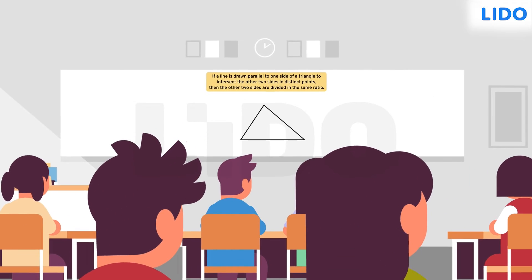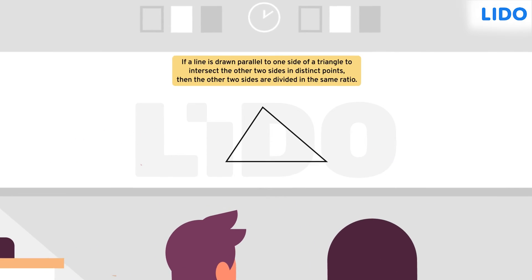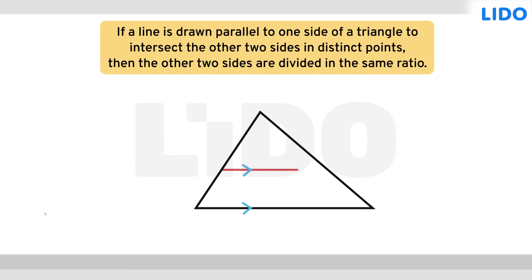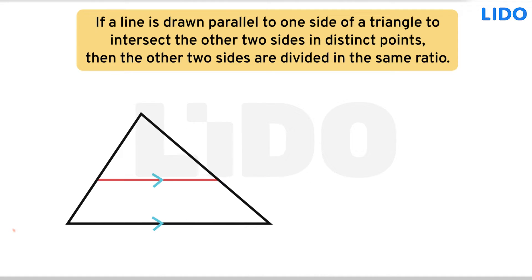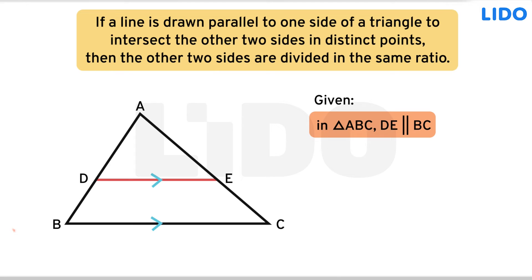Let's look at the proof of the Basic Proportionality Theorem. As per the statement of the theorem, if a line is drawn parallel to one side of a triangle to intersect the other two sides in distinct points, then the other two sides are divided in the same ratio. That is, in triangle ABC, if DE is parallel to BC, then AD over BD is equal to AE over CE.